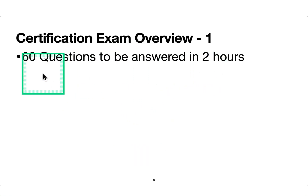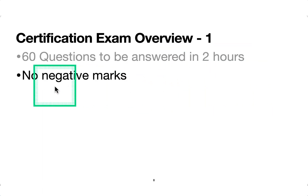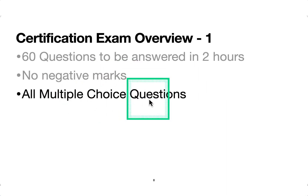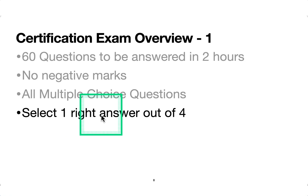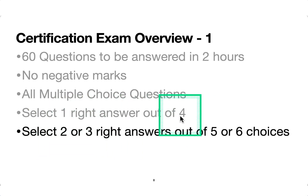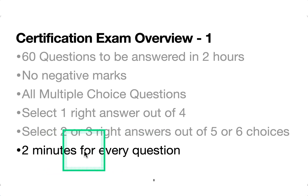Certification exam overview: on the website it's listed as 50 questions, but in my case it was 60 questions, and the time was two hours. There are no negative marks for any questions, so make sure you attempt every possible question. It's all multiple choice — 90% of the time it's selecting one right answer out of four, but there can also be cases where you select two out of five or three out of six, requiring multiple answers. You can do the math: this works out to around two minutes per question.